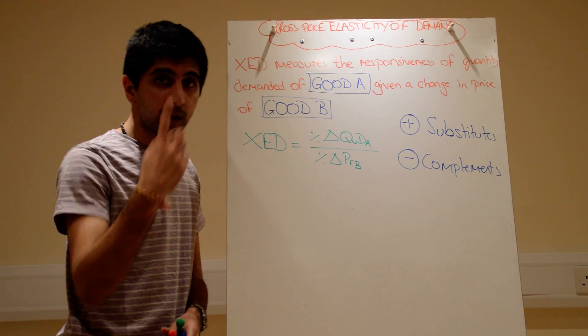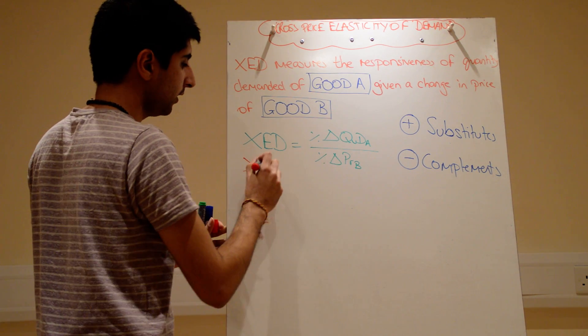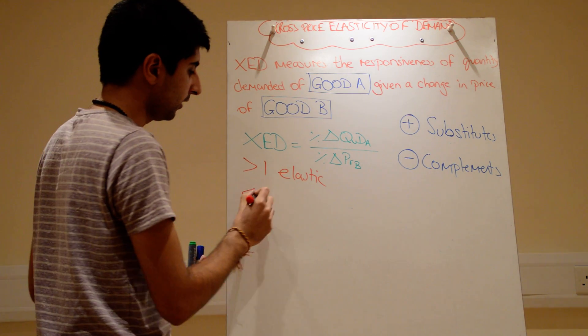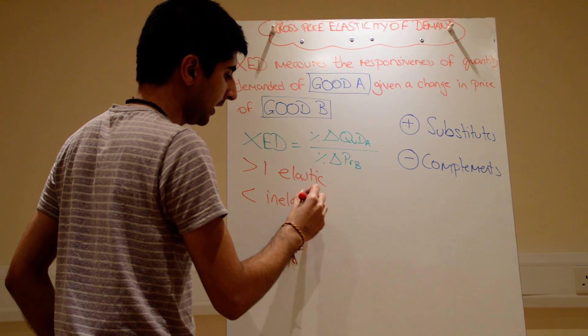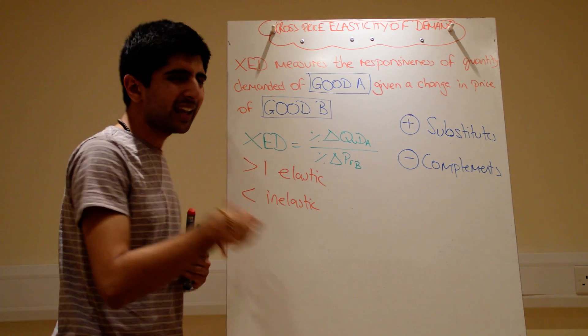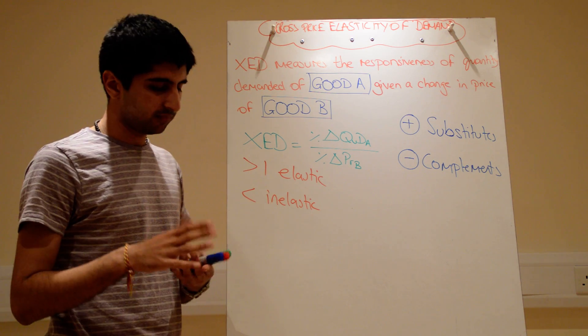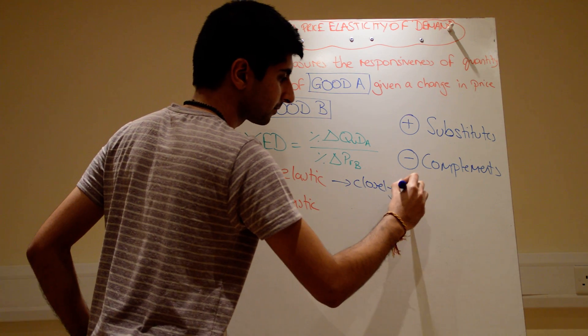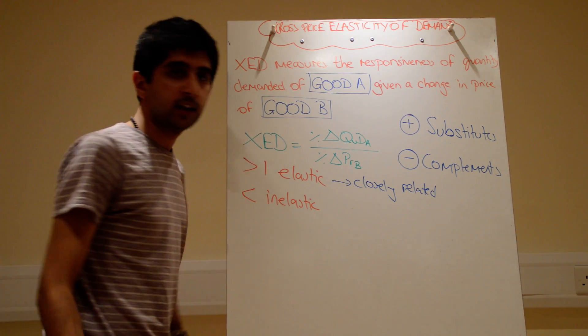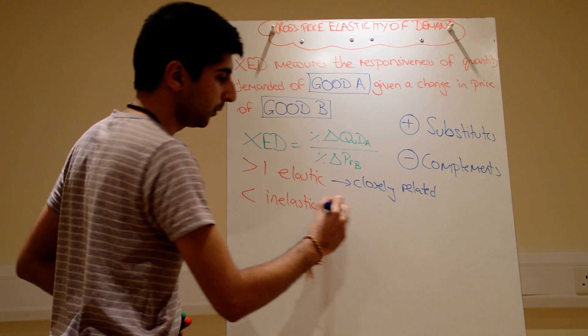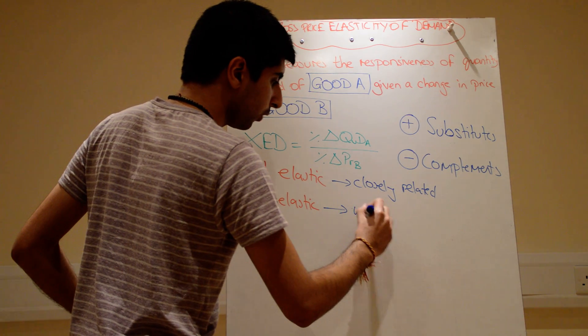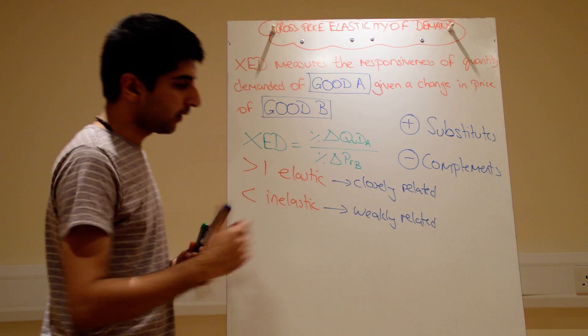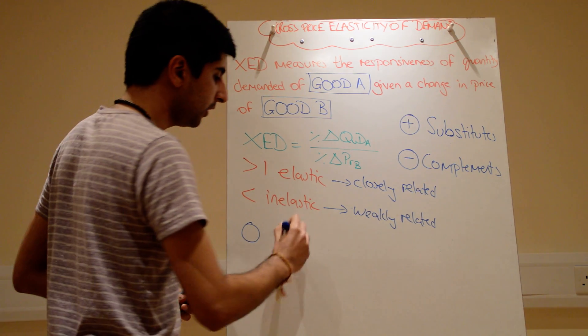And again, we still use the number one as our key number. Regardless of the sign, greater than one: elastic. So when you've worked out the signs, then ignore it and just look at the number. Greater than one, elastic; less than one, inelastic. But we can say more than that. Instead of just saying the goods have an elastic relationship, you can maybe say the goods, because they're greater than one, are closely related. That's really a better way to talk about the amount of elasticity. The goods have a close relationship or are closely related, whereas here the goods have a weak relationship or are weakly related. When the figure is zero, there is absolutely no relationship.